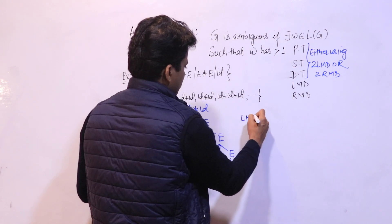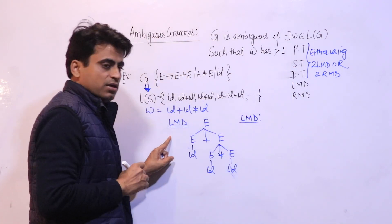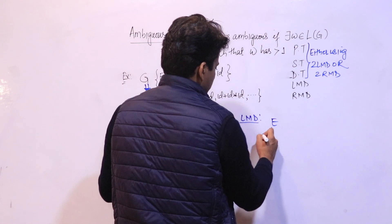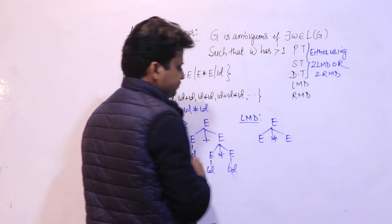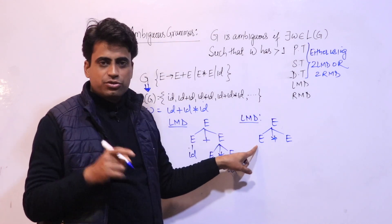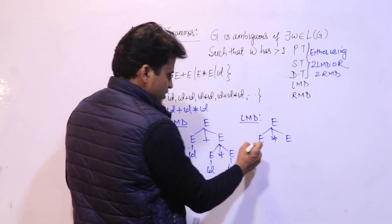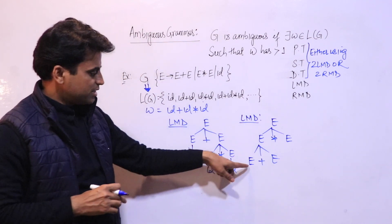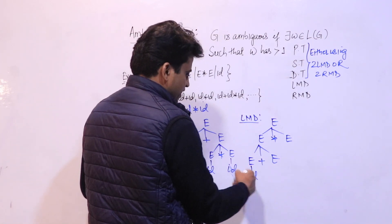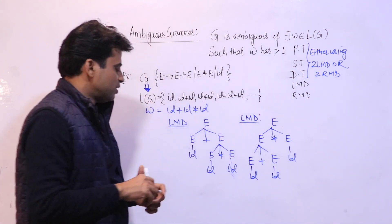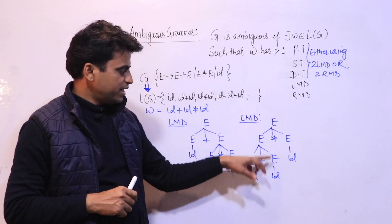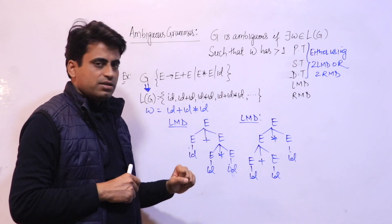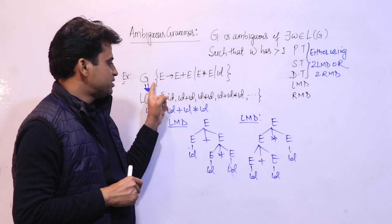Now let's see another LMD process. This time replace E with E into E first. In leftmost derivation, the leftmost variable is expanded first. So expand this E as E plus E. Then replace the left E with id, then replace the next E with id, and finally the last E with id. This also gives id plus id into id. So for this same sentence there is more than one LMD, hence this grammar is ambiguous.